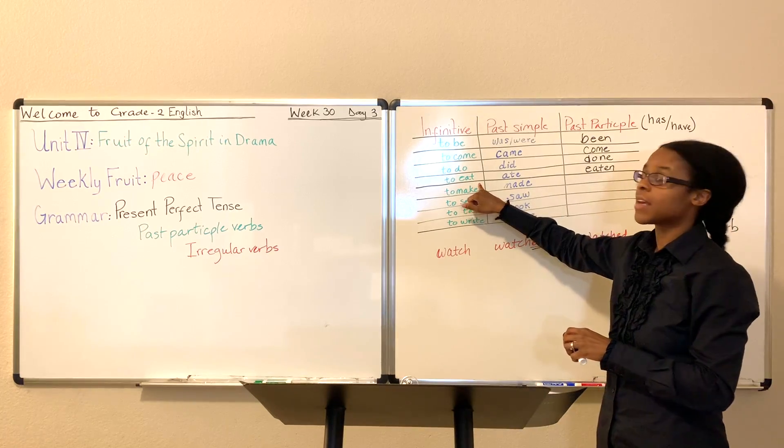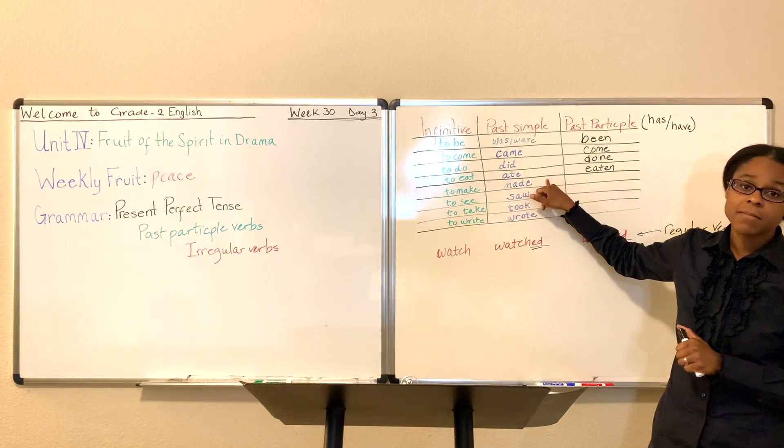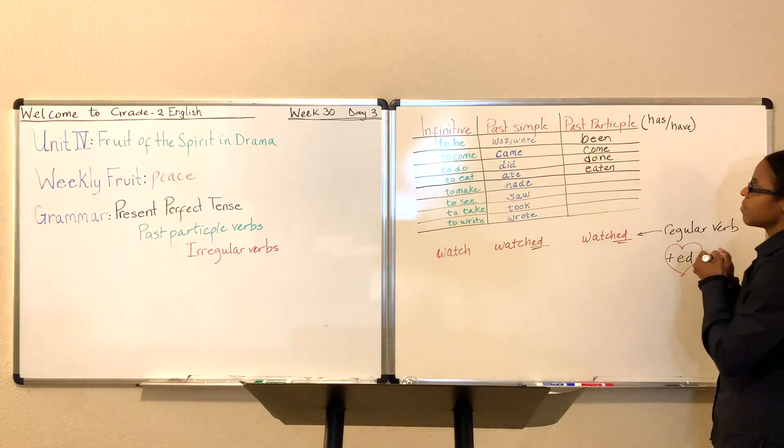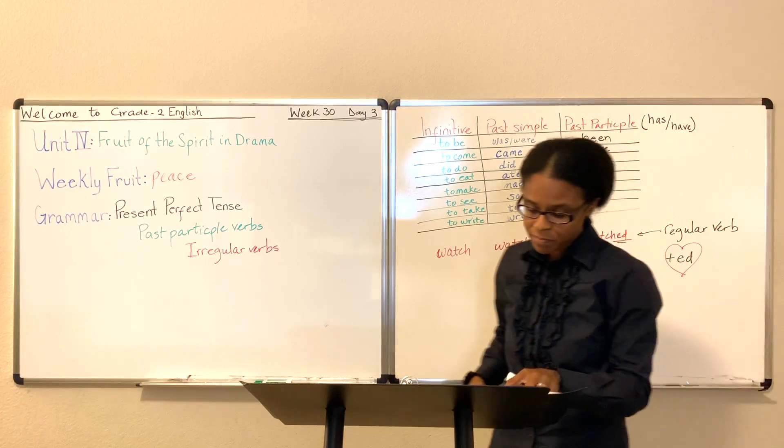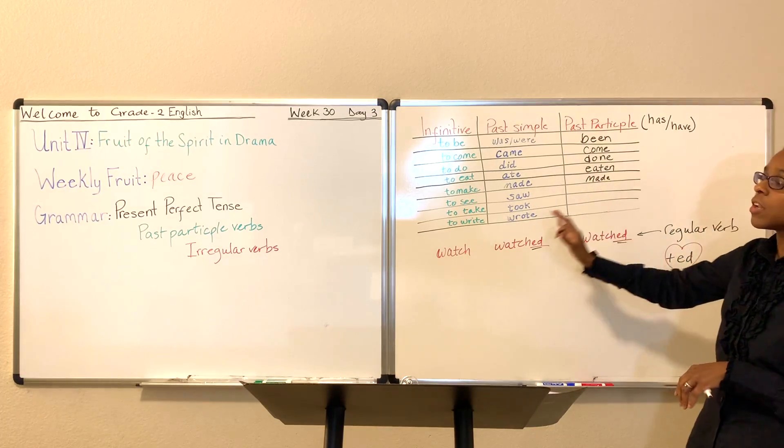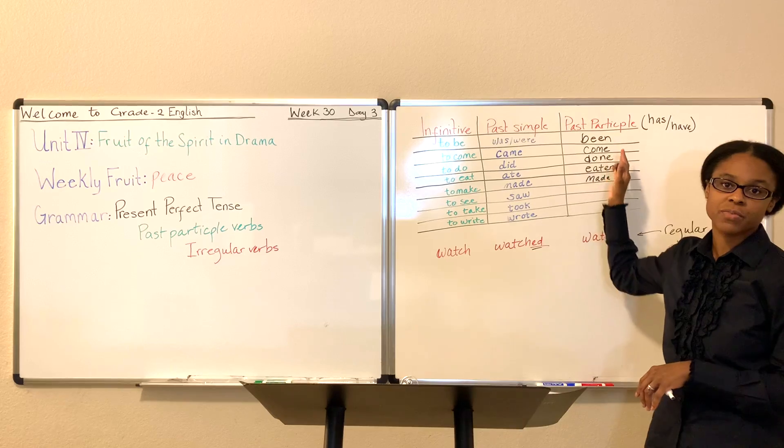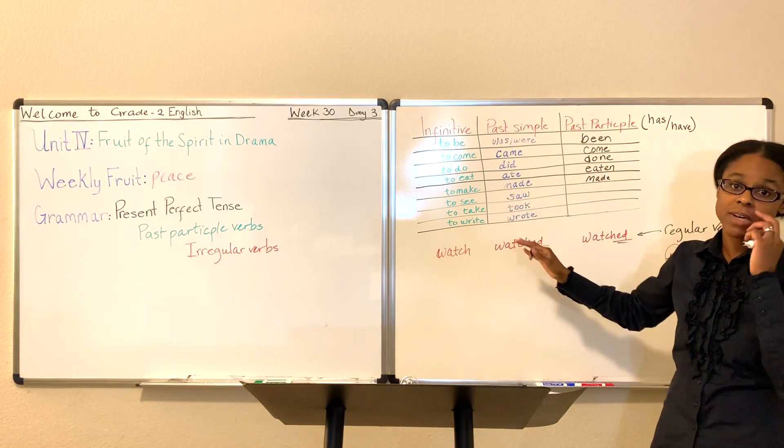So, I make pancakes. I made pancakes. I have made pancakes. So, this one is made. M-A-D-E. Made. Are you following me so far? I'm just trying to show you how all of these are irregular verbs. I'm trying to show you how they compare. How the past participle verbs compare with the past simple and the present simple as well.